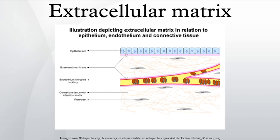Heparin sulfate is a linear polysaccharide found in all animal tissues. It occurs as a proteoglycan in which two or three HS chains are attached in close proximity to cell surface or ECM proteins. It is in this form that HS binds to a variety of protein ligands and regulates a wide variety of biological activities, including developmental processes, angiogenesis, blood coagulation, and tumor metastasis.